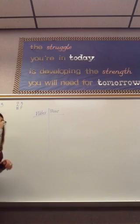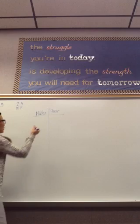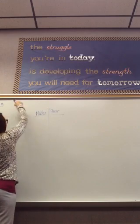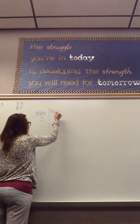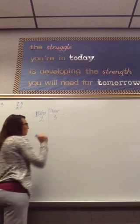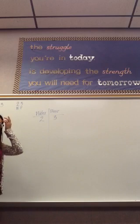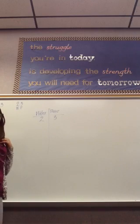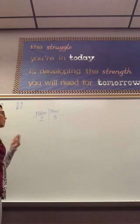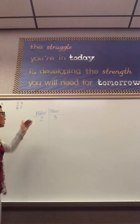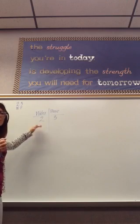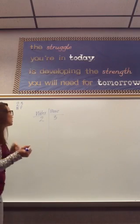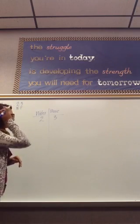You'll always start with your original ratio, which is 2 cups of water to 3 cups of flour. Go ahead and come up with another ratio that would go in the ratio table and be equivalent to 2 to 3.